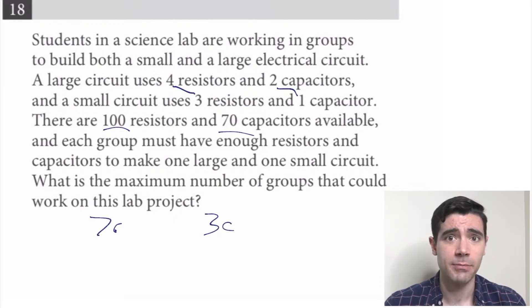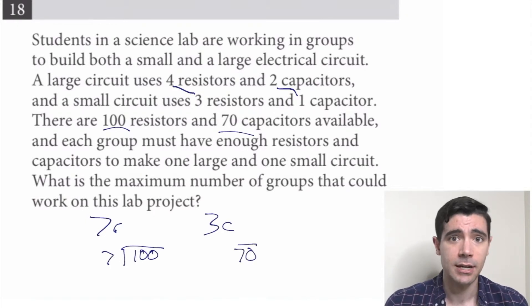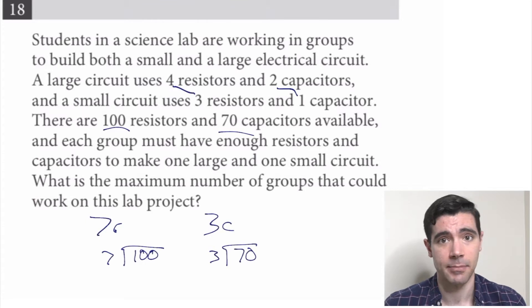So I wonder, which item of equipment is going to limit how many groups there can be? If each group needs seven resistors, then I could divide 100 by 7 to figure out how many groups there can be. And if each group needs three capacitors, then I could divide 70 by 3 to find out how the capacitors might limit my group number.